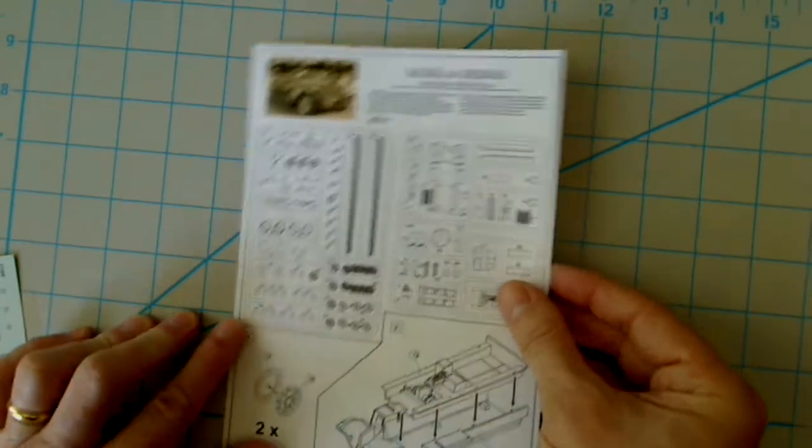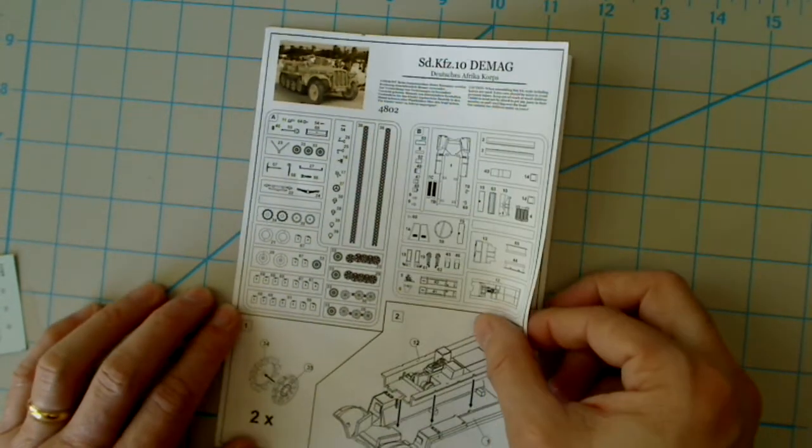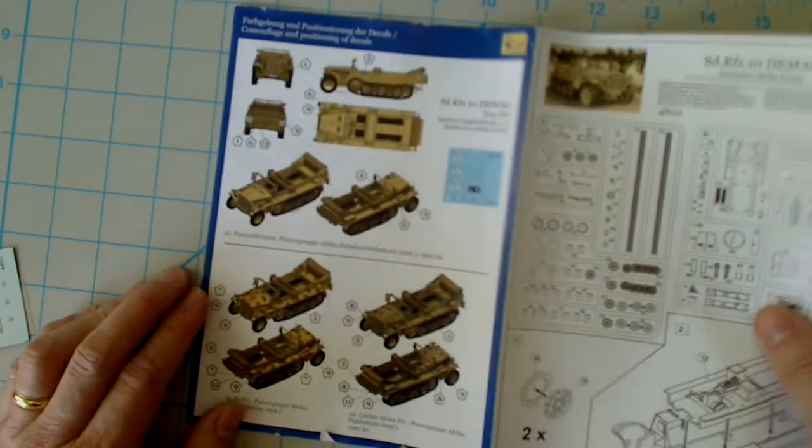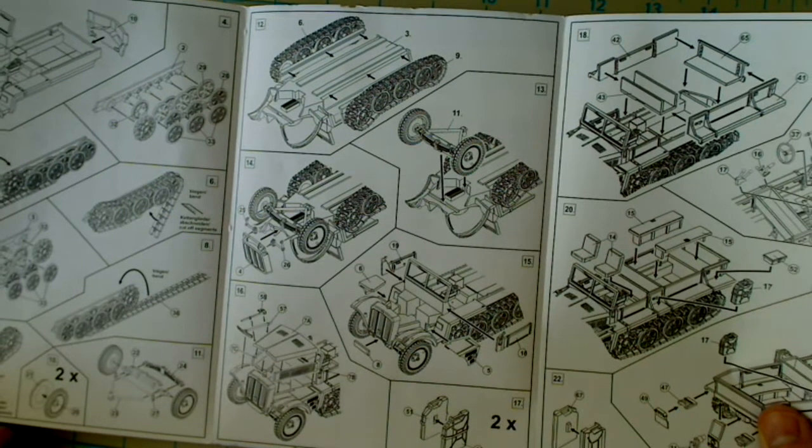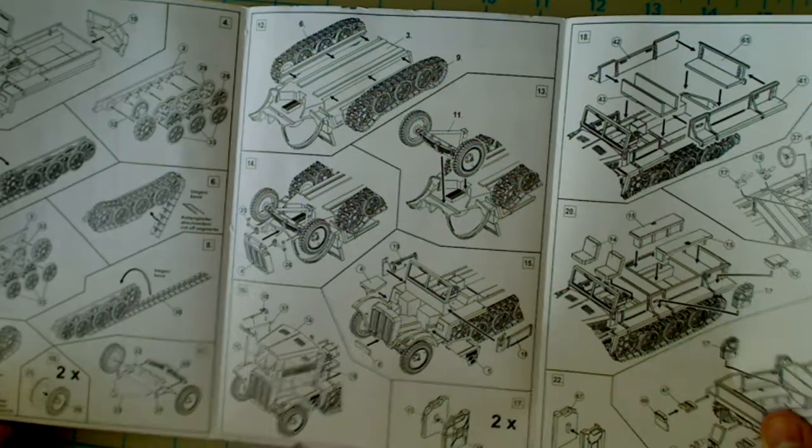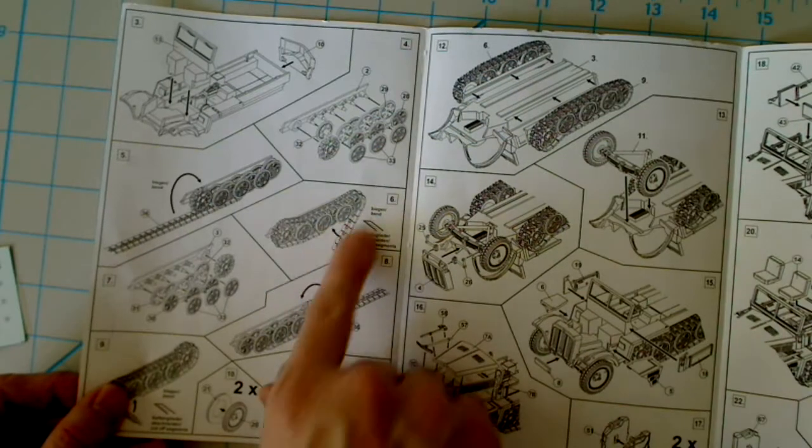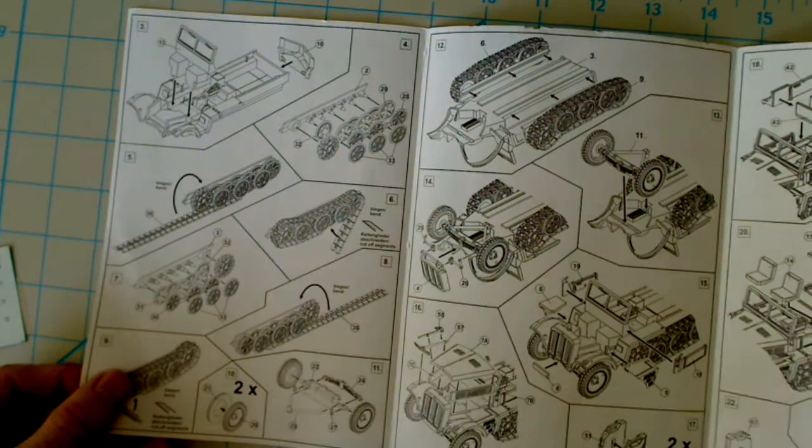Instructions. Basically, they are a color process print with color images on the front there and back. And the rest are in black and white line art. Pretty good, pretty good instructions, I would say. They do show you here on the tread how you're going to have to bend these around, essentially.